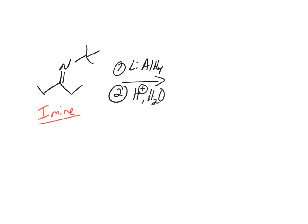...is react it with a reducing agent, lithium aluminum hydride, and then in the second step, H⁺ in water. This is a way to make secondary amines — a way to reduce and add hydrogens to the carbon of the imine — because lithium aluminum hydride is H minus, a hydride source. So you can essentially draw it as just H minus.